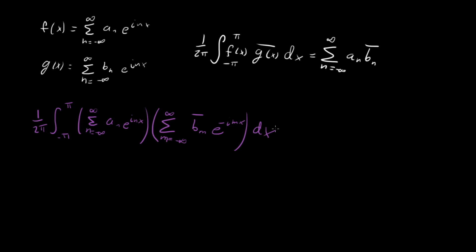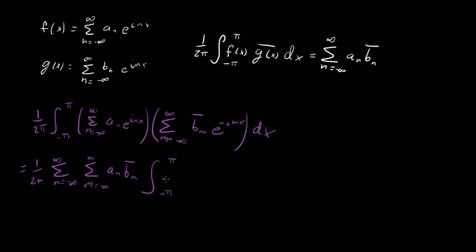We can simplify this by noting that our integral is only with respect to dx, so we can pull out the sums and the coefficients a_n and b_m, and just integrate the exponentials. That looks like 1 over 2π, with the two sums — n going from minus infinity to infinity and m going from minus infinity to infinity — then a_n b_m-bar, and then the integral from minus π to π of e^(inx) times e^(-imx) dx.